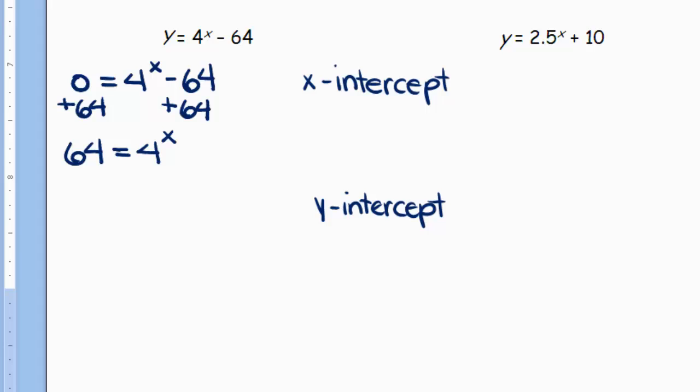And I get 64 = 4^x. Then it's just a matter of guessing until you get to the right number or pretty close. If I look at this one, 4 to the first is 4, 4 to the second is 16, and 4 to the third is 64. So that means that my x is equal to 3. The x intercept is then (3, 0).